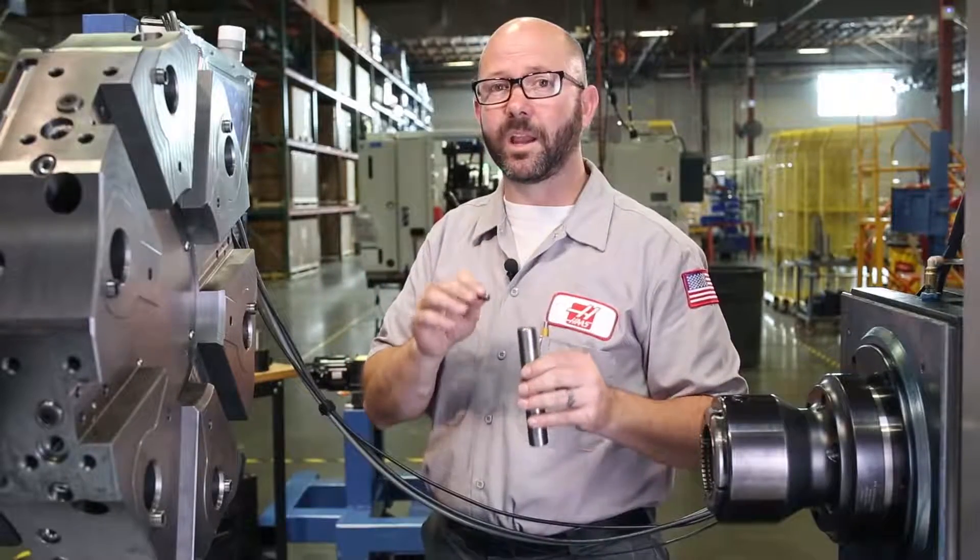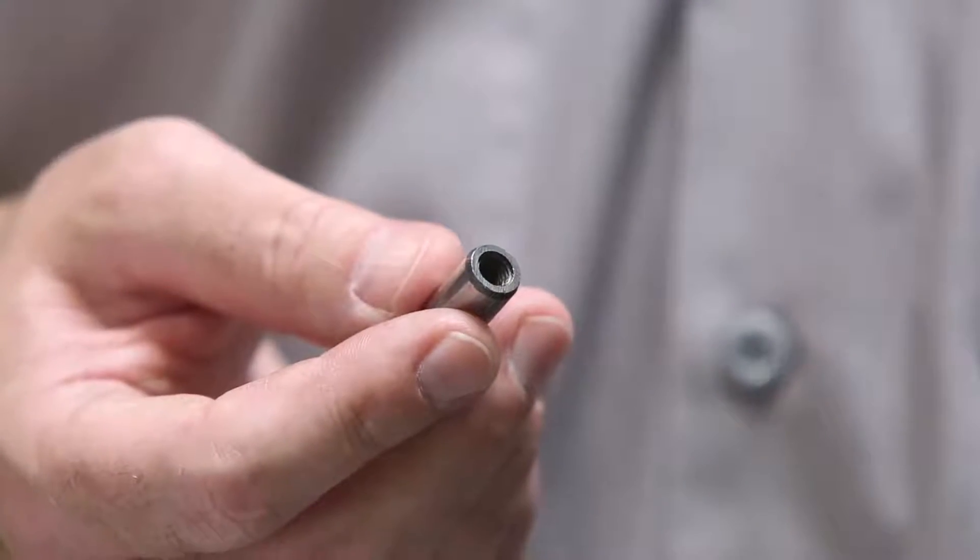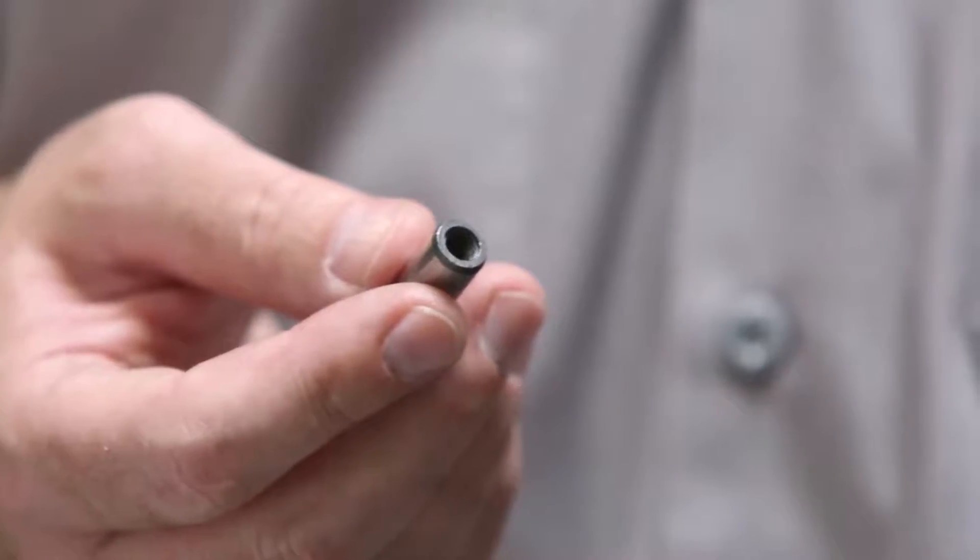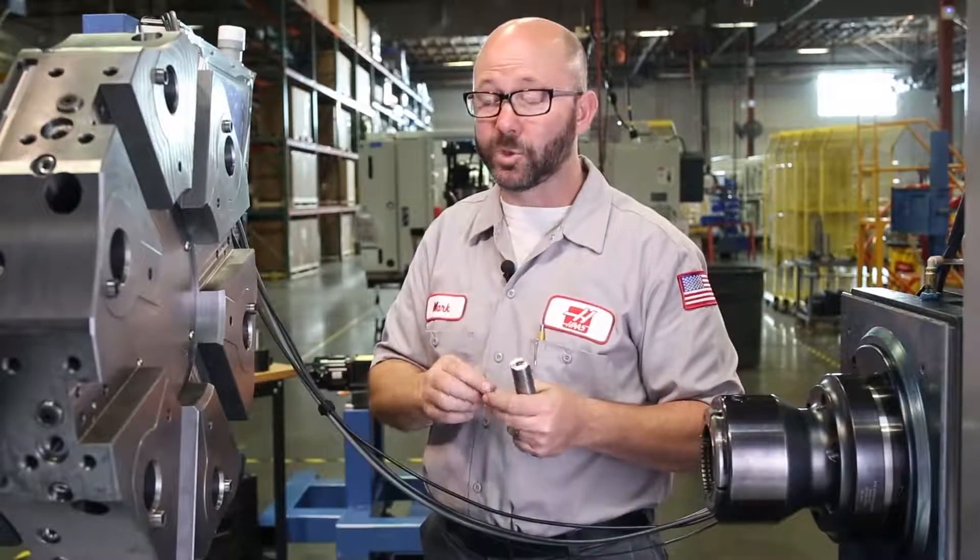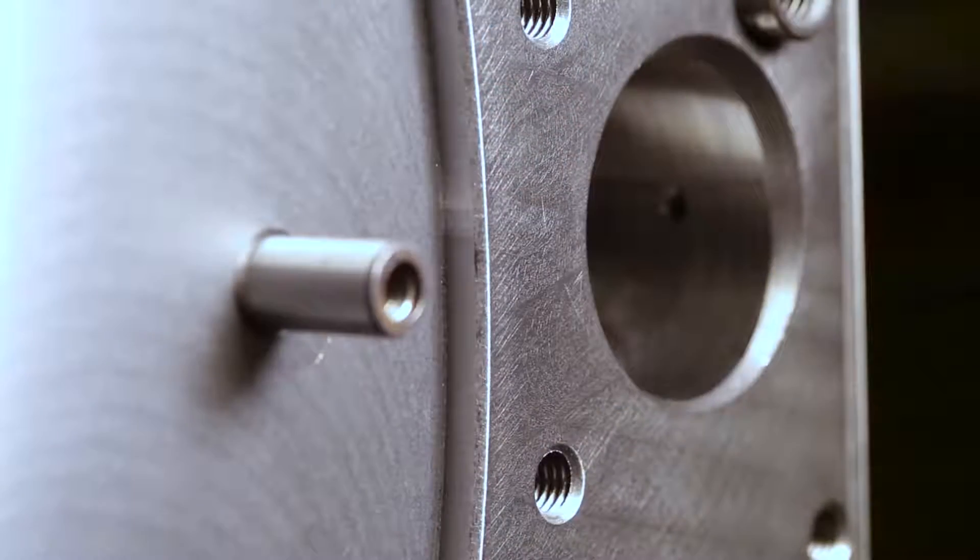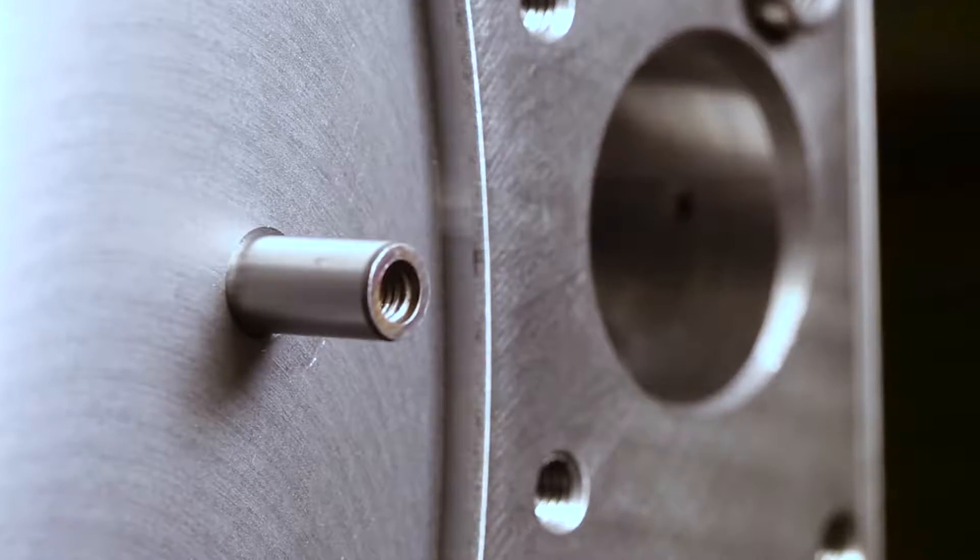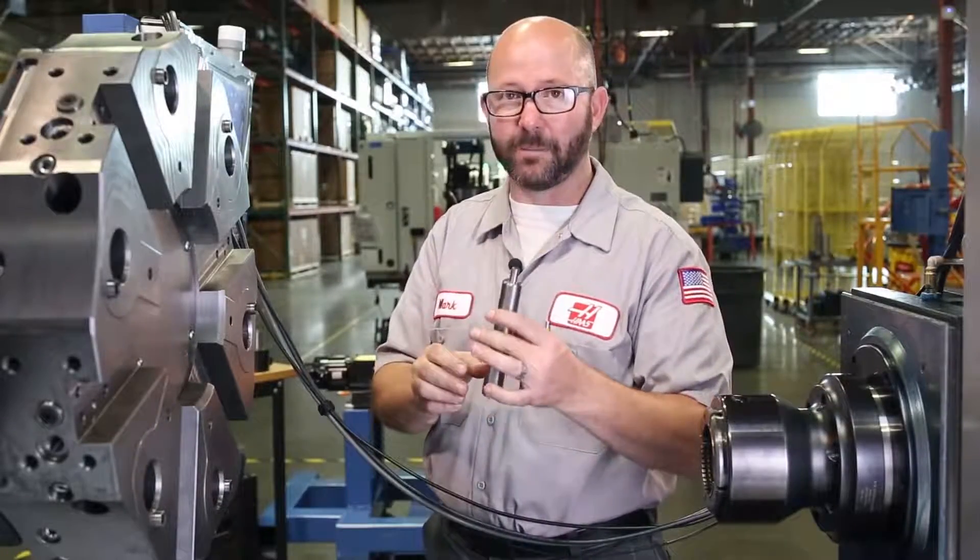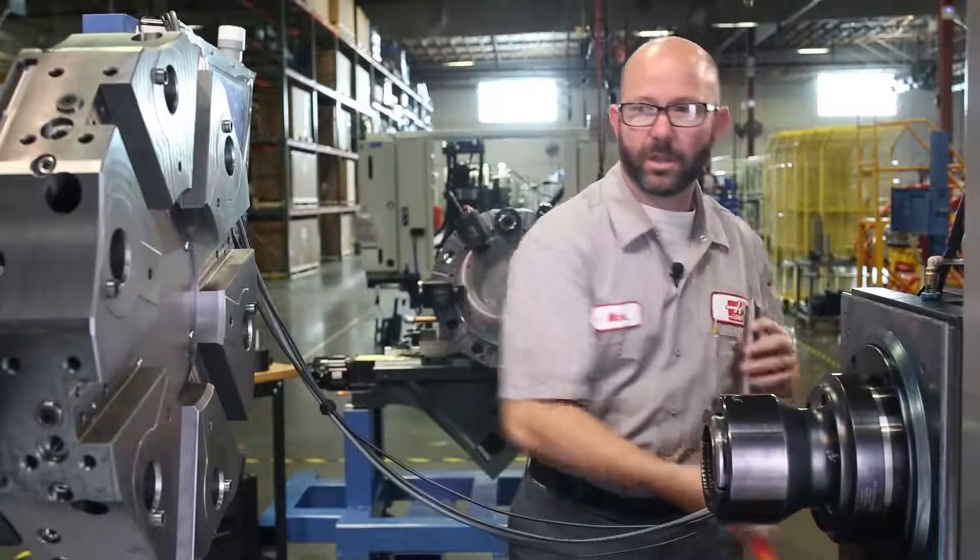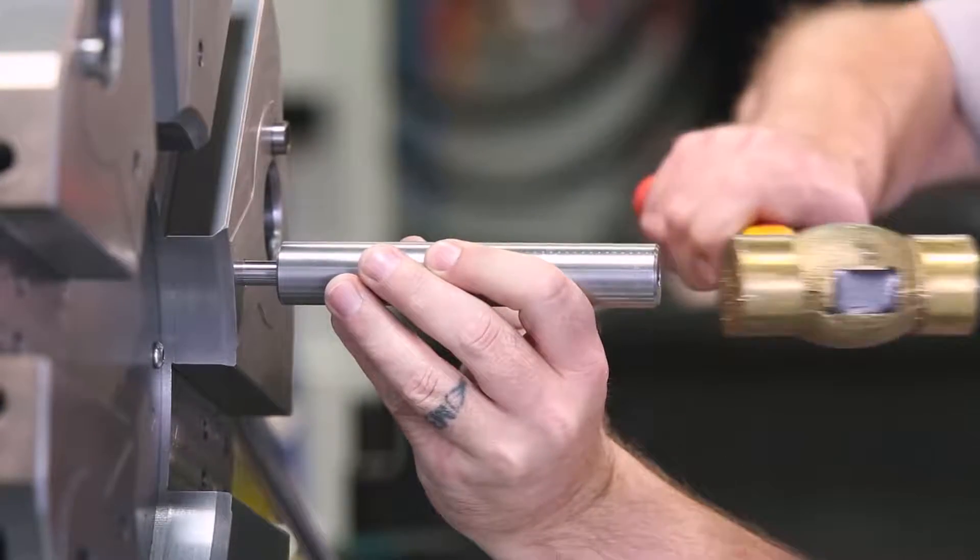Now when we put these pins in we need to be careful. There's an M6 by 1 threaded hole on one end. This hole is so we can yank the pin out later if we have to. So when you're putting this pin in make sure the threaded hole is facing you. Not facing towards the turret. Got it? Okay, great.